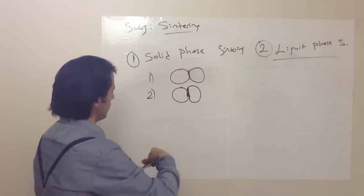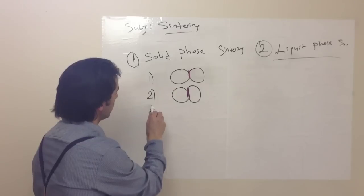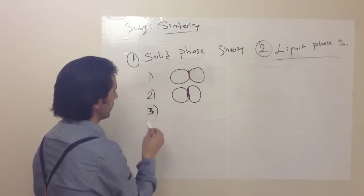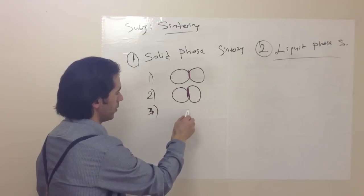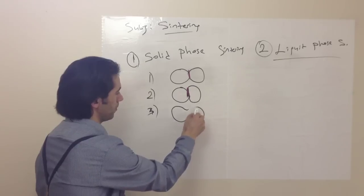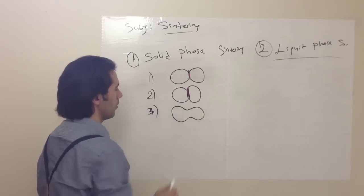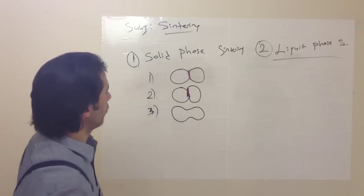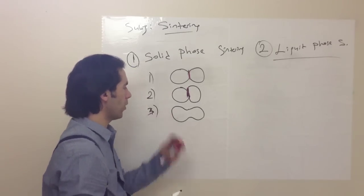And our third step. We see more diffusion now. They are almost, they are being one, they are trying to be one particle.